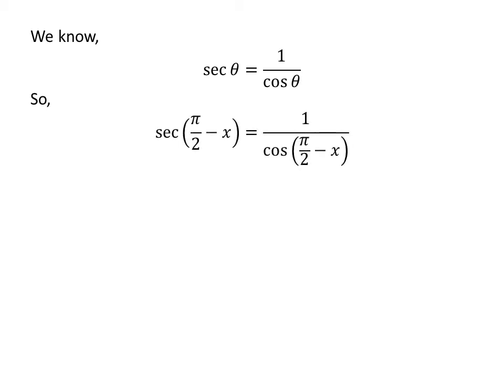So application of above trigonometry identity gives us secant of half of pi minus x is equal to 1 upon cosine of half of pi minus x.